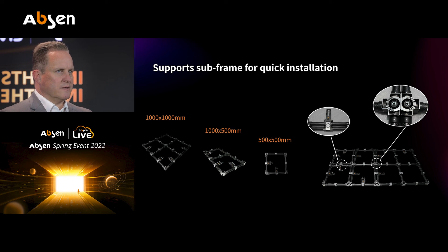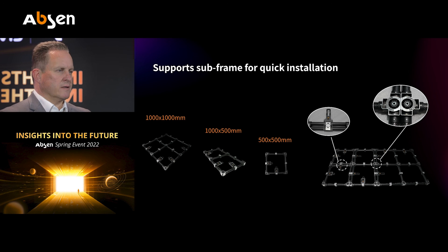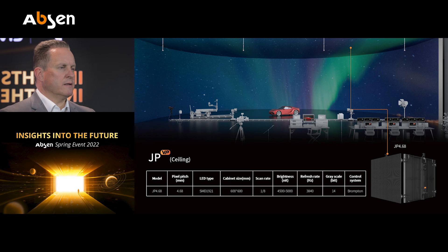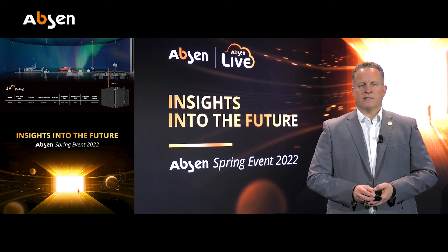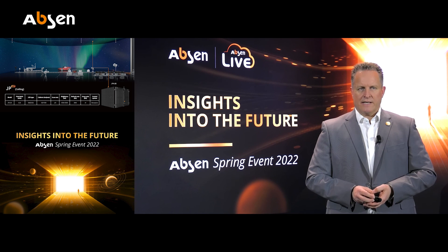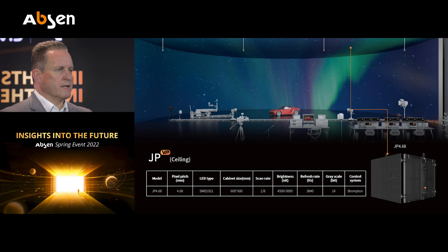For the ceiling, we have the JP series — and don't forget we will come up with our PR series 5.2 for the ceiling as well. The already existing JP 4.68 is a lightweight product with a 1/8 scan rate, also with Brompton processing, suitable for virtual production ceiling and also in between for reflections wherever needed. Even though it was originally designed as a mesh product, it has a solid surface and brings quite high brightness.